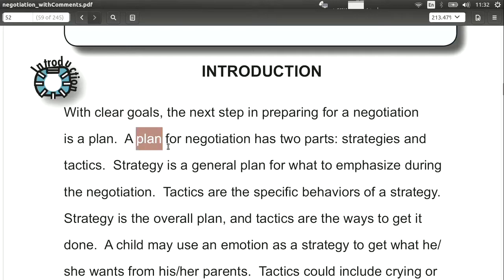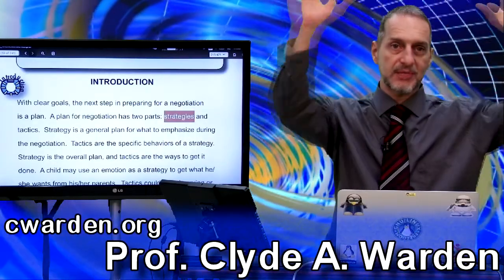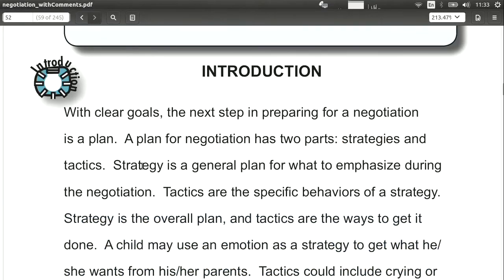A plan is a way to get your ideas together and formalize them. It's best when you write things down and discuss them with your team members so you get clear and unified. Now, your plan has two basic parts: your strategy and your tactics. Strategy is the overall big picture — the big idea, the big thing you're going to do. Tactics are how you execute that strategy — the specific behaviors you actually perform to accomplish it.